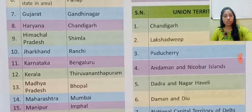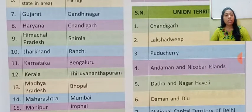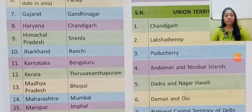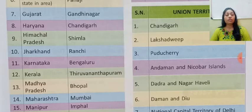Number 7: Gujarat — capital is Gandhinagar. Number 8: Haryana — capital is Chandigarh. Number 9: Himachal Pradesh — capital is Shimla. Number 10: Jharkhand — capital is Ranchi. Number 11: Karnataka — capital is Bangaluru. Number 12: Kerala — capital is Thiruvananthapuram.